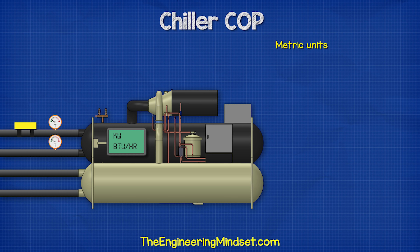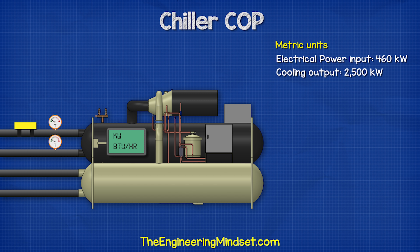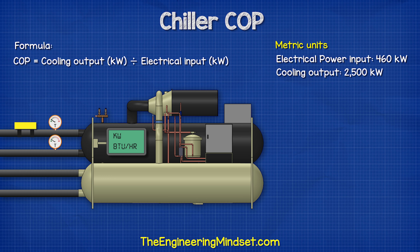Coming back to the COP and considering the metric units first, we can see from our data gathering that this chiller is demanding 460 kilowatts of electricity and is providing 2,500 kilowatts of cooling. Using the formula COP equals kilowatts of refrigeration divided by the kilowatts of electricity, if we drop those numbers in, we get a COP of 5.4.